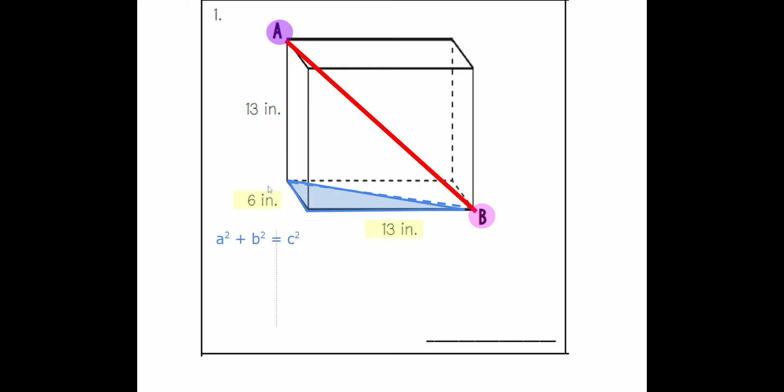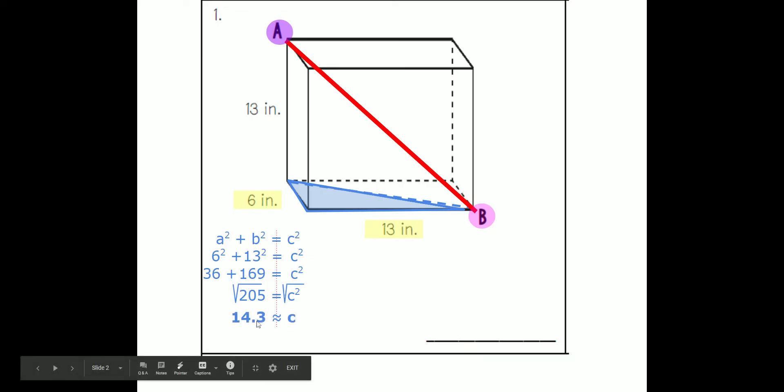The relevant sides are going to be 6 and 13. They're both legs, so C squared is missing, or the hypotenuse is missing. 6 squared plus 13 squared equals C squared. 6 squared is 36. 13 squared is 169. Add those two up, you get 205. We're going to square root it, and C ends up equaling 14.3. This length is 14.3.